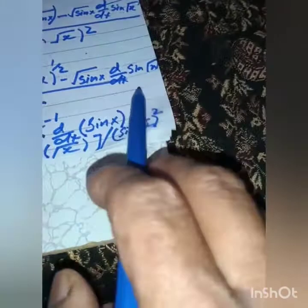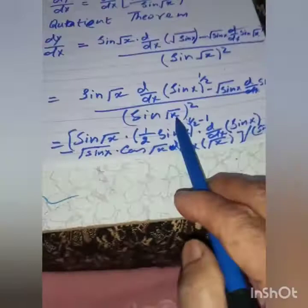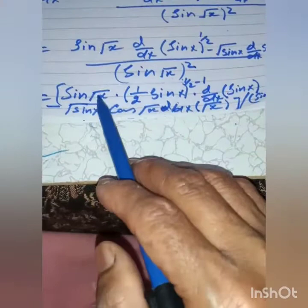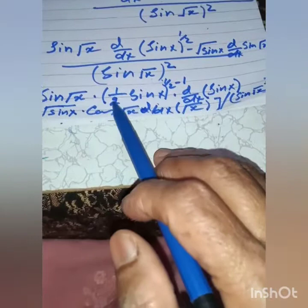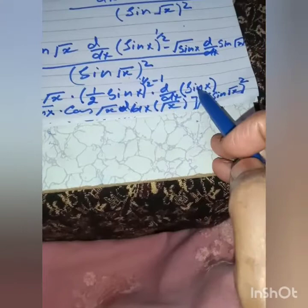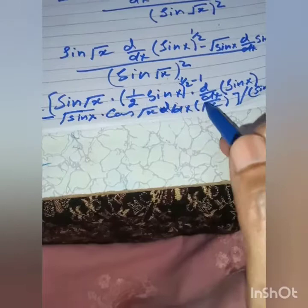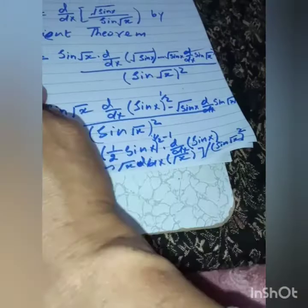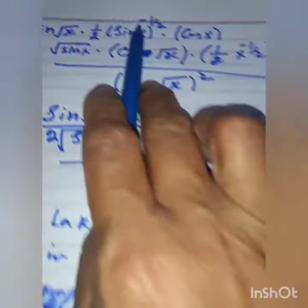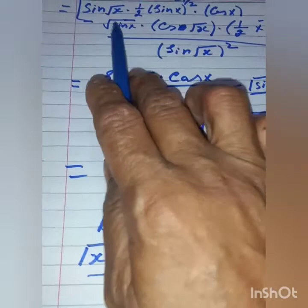Expanding: sin(√x) · (1/2)·sin^(−1/2)(x)·cos(x) minus √(sin x) · cos(√x) · d/dx(√x), divided by sin²(√x). The derivative of √x is 1/(2√x), so we get sin(√x)·cos(x)/(2√(sin x)) minus √(sin x)·cos(√x)/(2√x), all divided by sin²(√x).